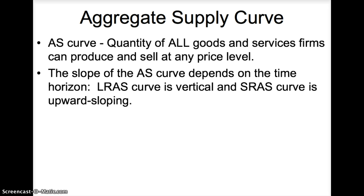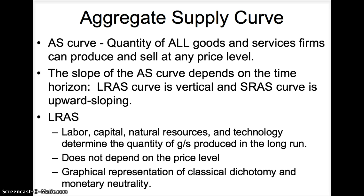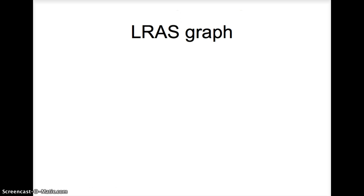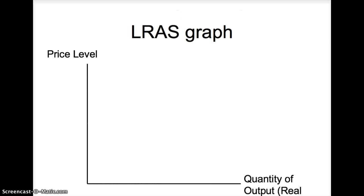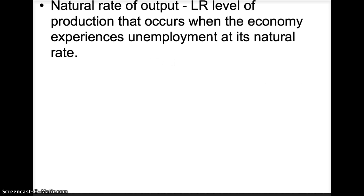In the long run, labor, capital, natural resources, and technology determine the quantity of goods and services firms can produce. The quantity of output produced in the long run does not depend on the price level. The LRAS is a graphical representation of the classical dichotomy and monetary neutrality, since labor, capital, natural resources, and technology are all real variables unaffected by the price level. The LRAS is drawn as a vertical line intercepting the horizontal axis at the natural rate of output — the long-run level of production when the economy is experiencing unemployment at its natural rate.